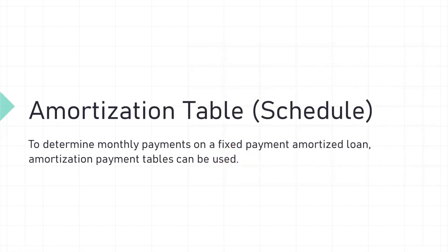To determine monthly payments on a fixed payment amortized loan, amortization payment tables can be used. Let's discuss how to determine principal, interest, taxes, and insurance — basically your monthly mortgage payment — using an amortization table, or sometimes called an amortization schedule.